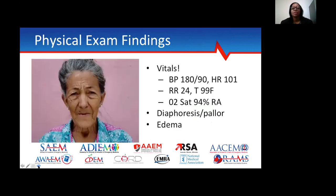Her vitals: blood pressure 180/90, heart rate 101, respiratory rate 24, temperature 99, oxygen saturation 94% on room air. She's diaphoretic when you walk into the room — clearly a patient you should be concerned about. She has pallor and bilateral lower extremity edema.